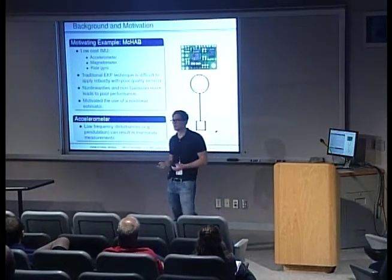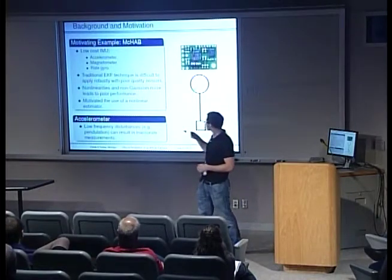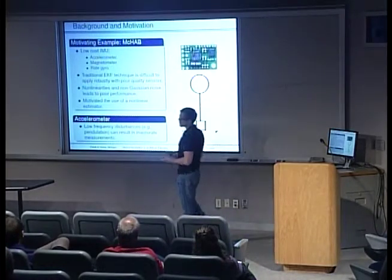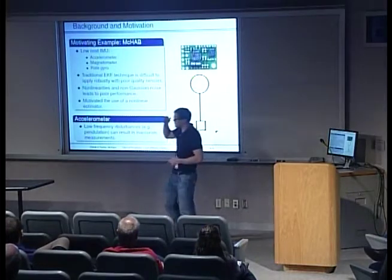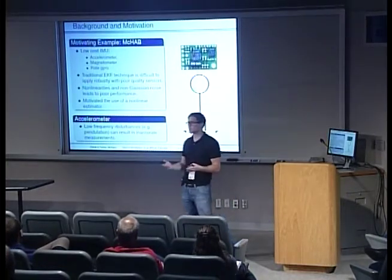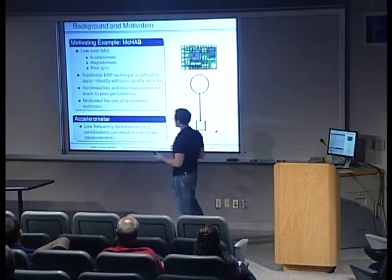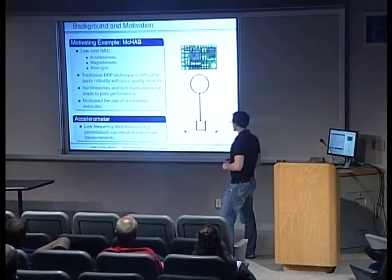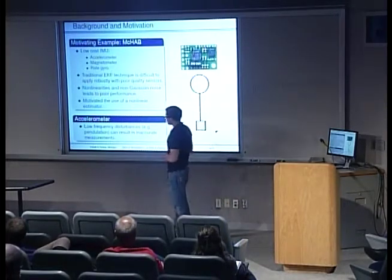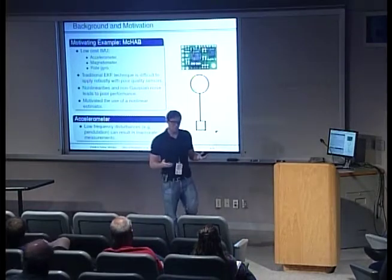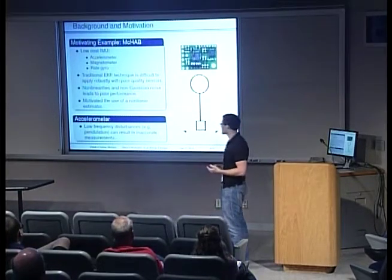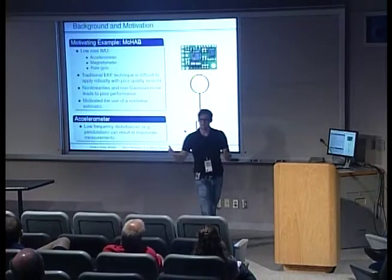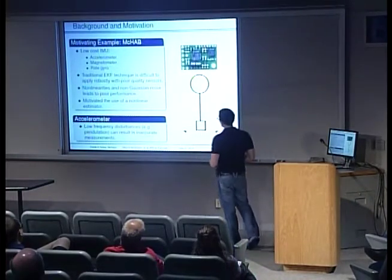With these sensors we could use an EKF for attitude estimation. However, traditional EKF techniques are difficult to apply robustly with poor quality sensors, due to the nonlinearities associated with attitude determination as well as non-Gaussian noise from poor quality sensors, which can lead to poor EKF performance. This motivated us to use a nonlinear SO3-based estimator, which I'll discuss later. Another issue with the IMU was the accelerometer: low-frequency disturbances such as centripetal acceleration associated with pendulation can cause inaccurate accelerometer measurements.